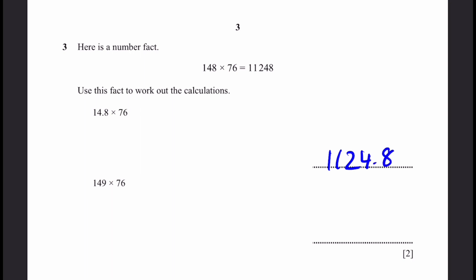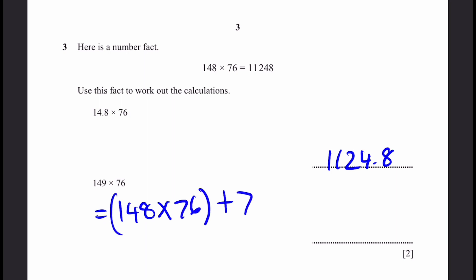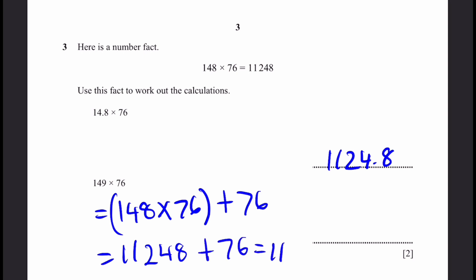Next, 149 times 76. Note that 148 times 76 is 11,248. So 149 times 76 is nothing but 148 times 76, and then you add 76 to it. We know that equals 11,248, so we just add 76 to get 11,324. That's the answer.